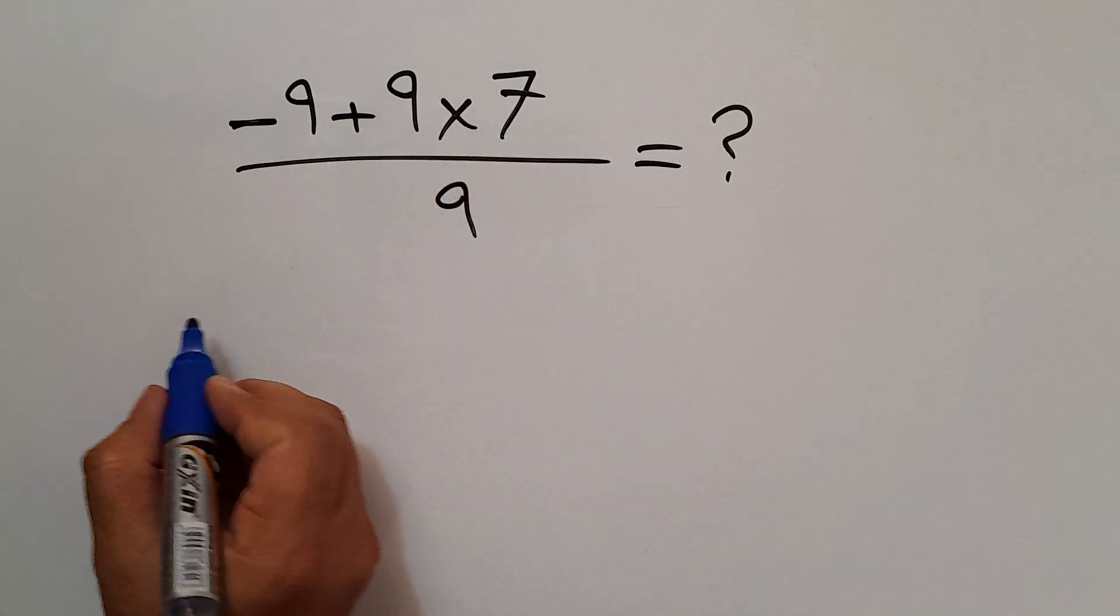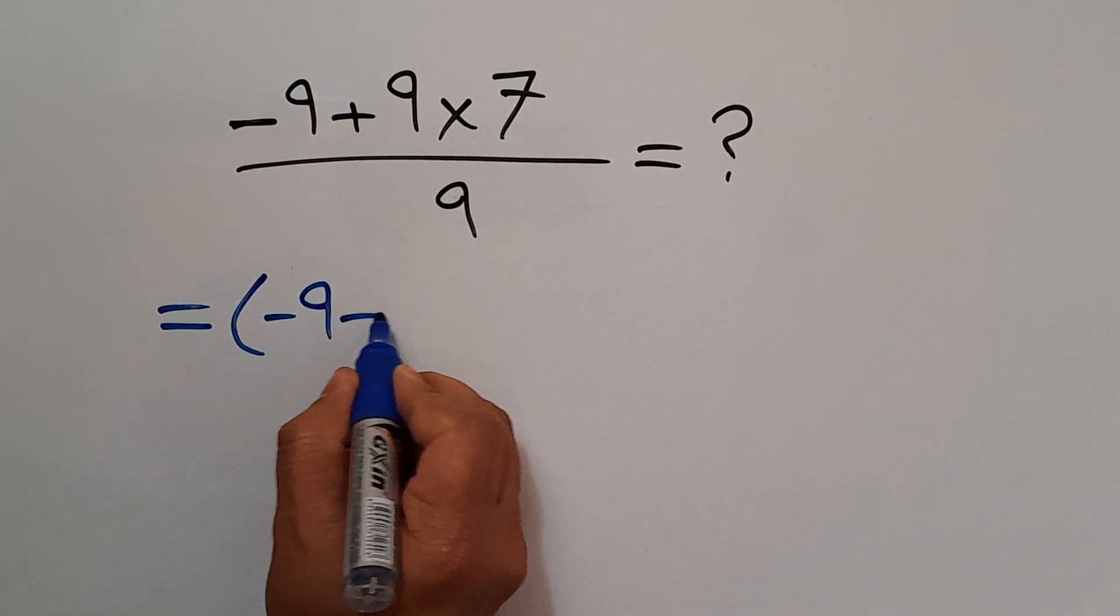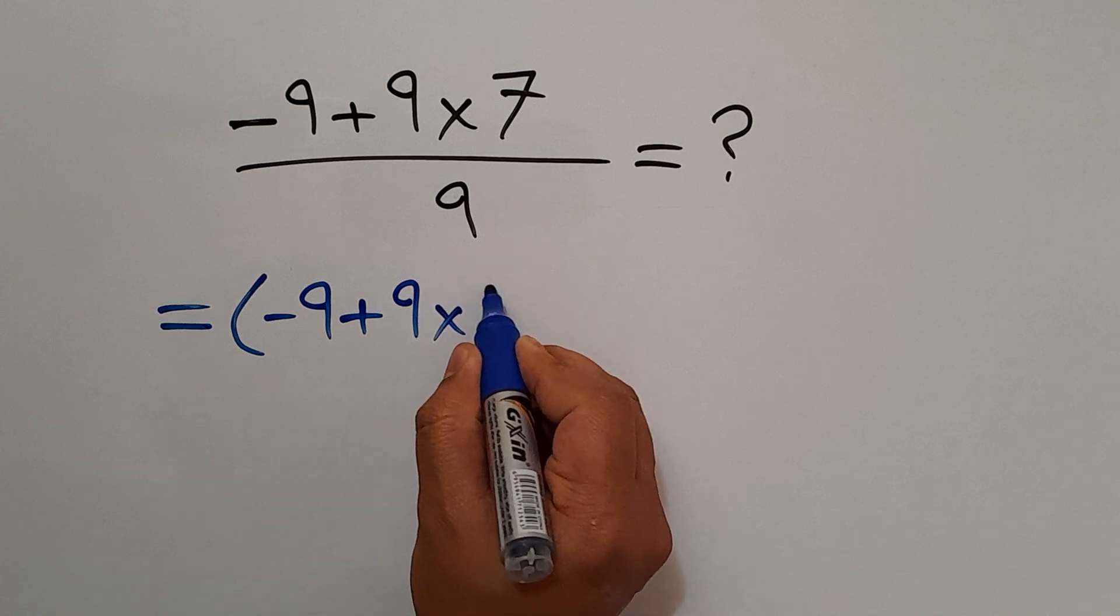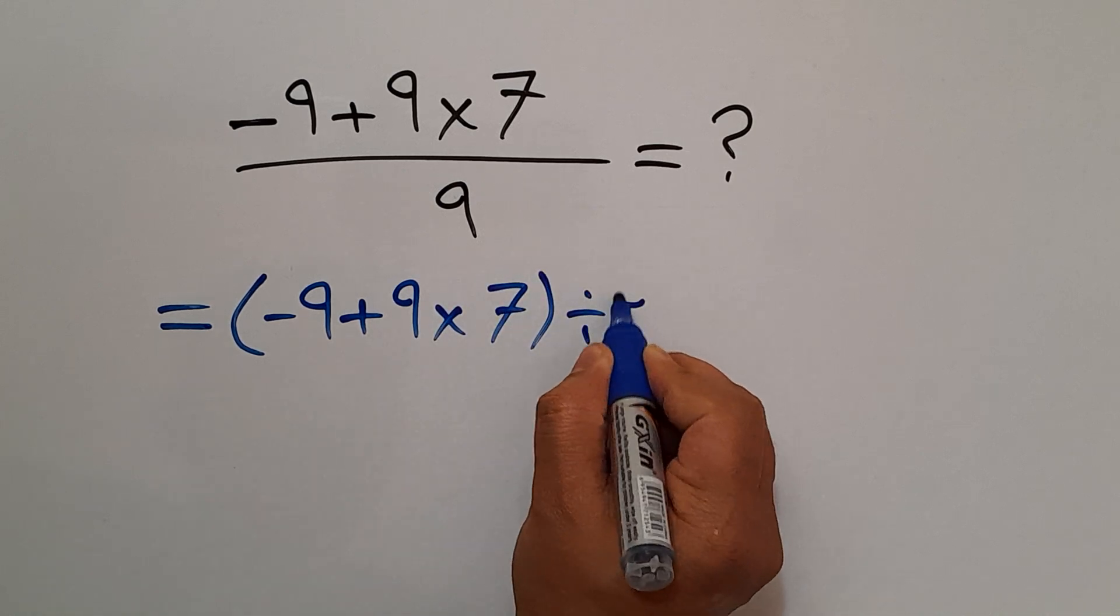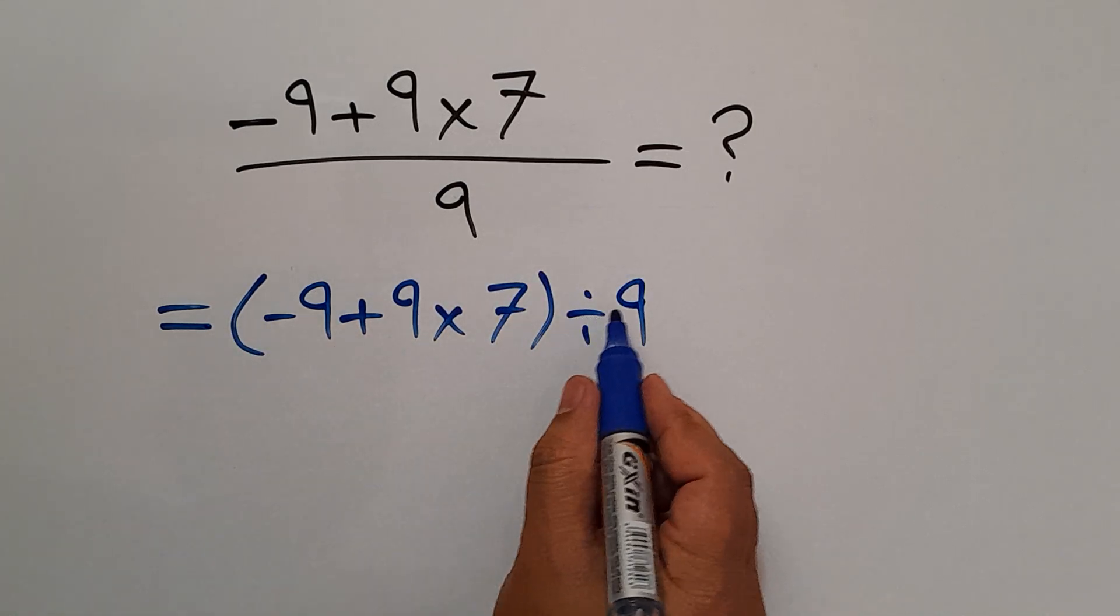This fraction can be written as parentheses negative 9 plus 9 times 7 divided by 9. The numerator divided by the denominator.